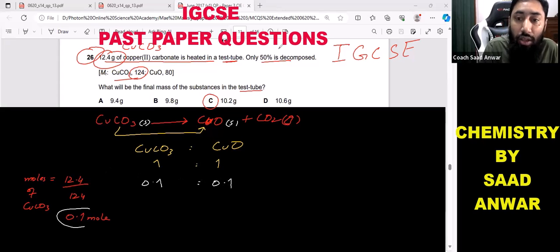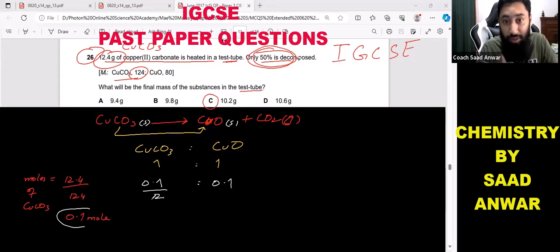But in the question they are saying only 50 percent is decomposed. 50 percent means half, half means we need to divide by two. So I have 0.1 moles of copper carbonate, so I will divide this by two. So when I divide this by two, this will be 0.05.